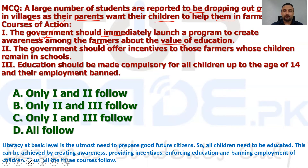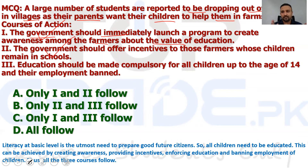Number two: the government should offer incentives to those farmers whose children remain in school. Now, farmers have a problem — they need their children's help. So if we tell them to send their children to school, we will give them some incentives and contribute something toward their problems. It makes a lot of sense, because education is a basic right for every single child. It is the state's responsibility to protect each child's basic rights. So we will incentivize them to keep their children in school. This is also a right course of action.